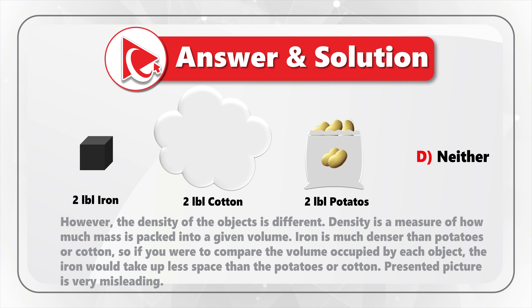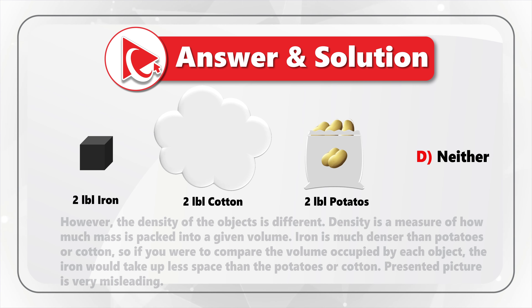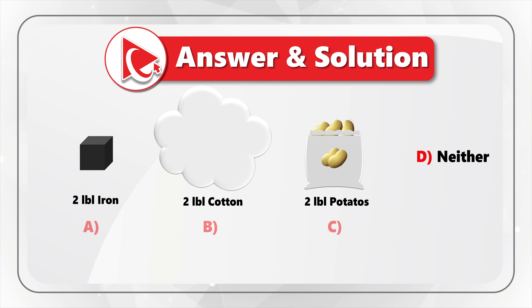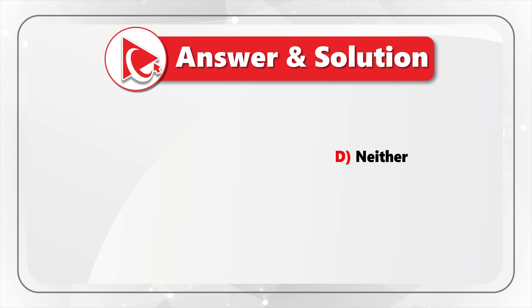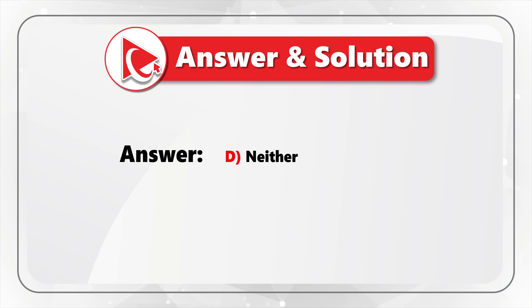Iron is much denser than potatoes or cotton. If you compare the volume occupied by each object, the iron will take up less space than the potatoes or the cotton. The presented images are very misleading and were designed to confuse you. So the correct answer here is Choice D — neither object — since neither object is the heaviest.